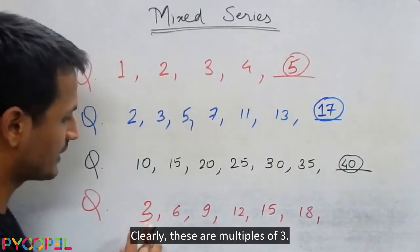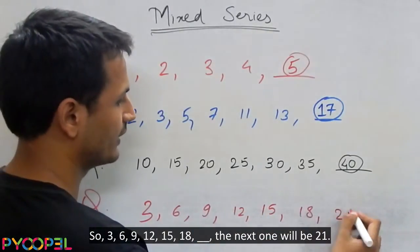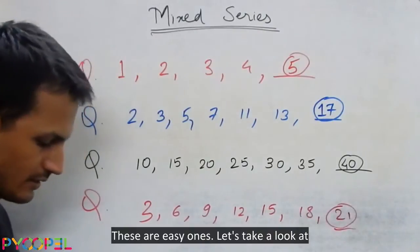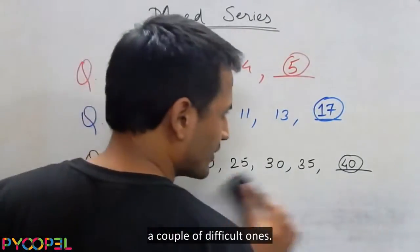Clearly these are multiples of 3. So 3, 6, 9, 12, 15, 18. The next one will be 21. These are easy ones. Let's take a look at a couple of difficult ones.